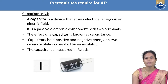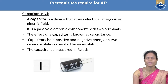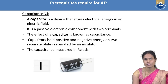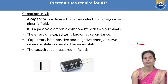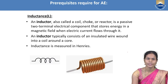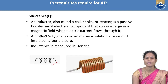The next electrical component is the capacitor, which stores electrical energy in an electric field. It has two terminals and two parallel plates separated by a dielectric material or insulator, which opposes the flow of electrons. Capacitance is measured in farads. The next component is the inductor, which stores energy in a magnetic field. The inductance is measured in henries.